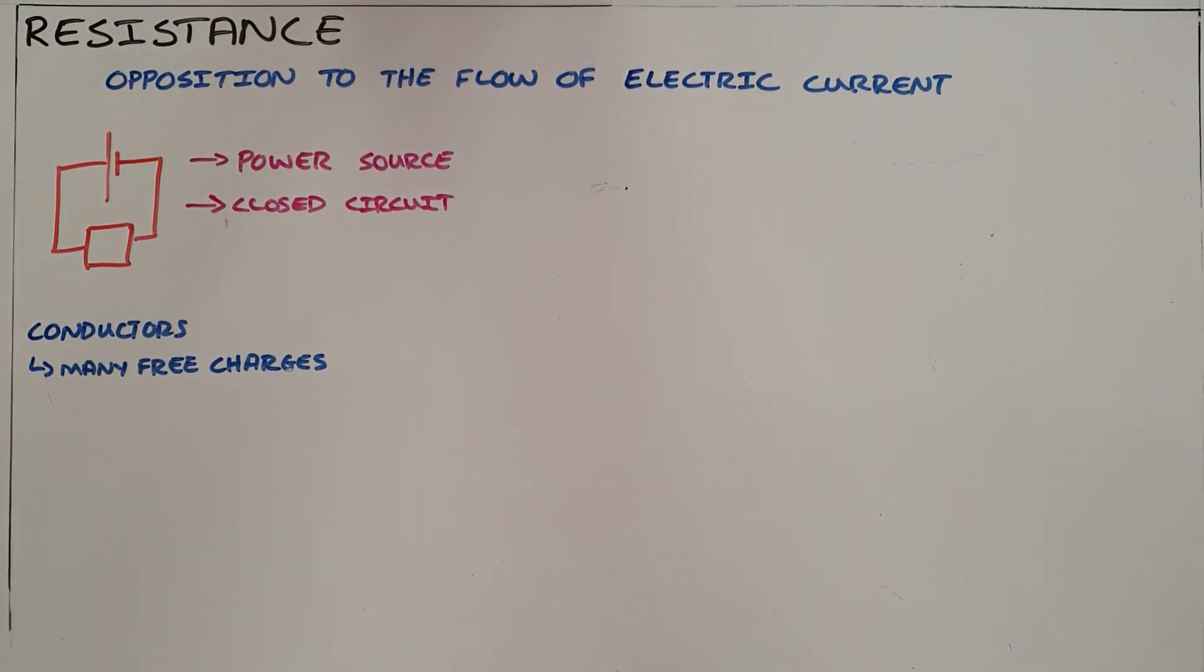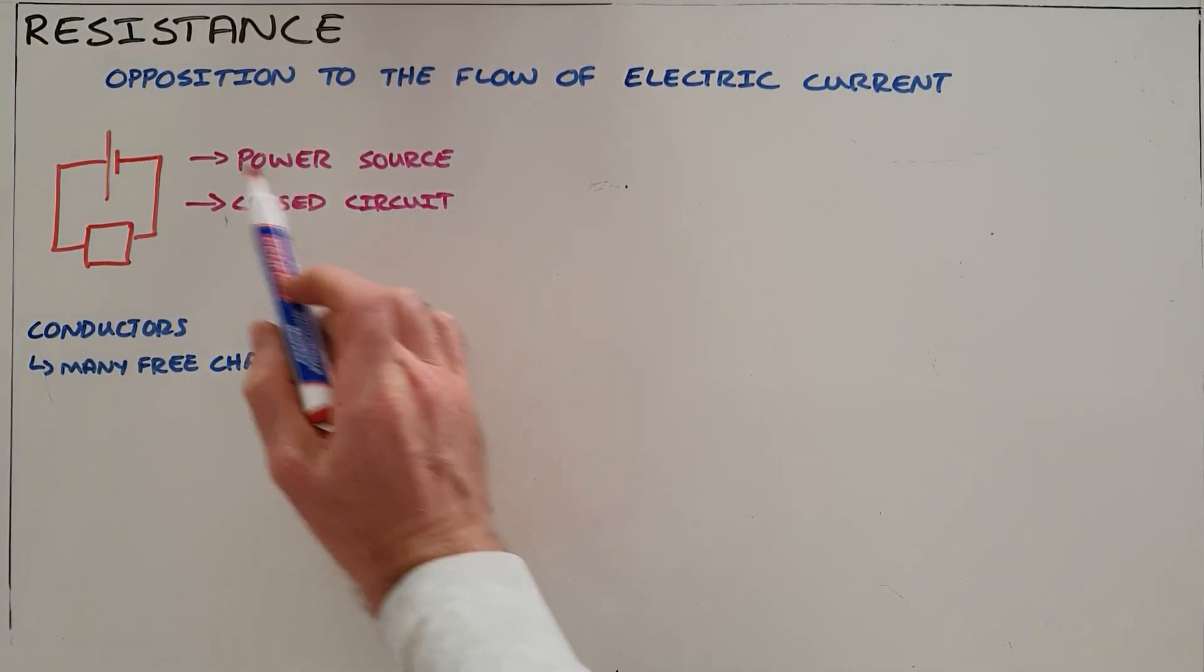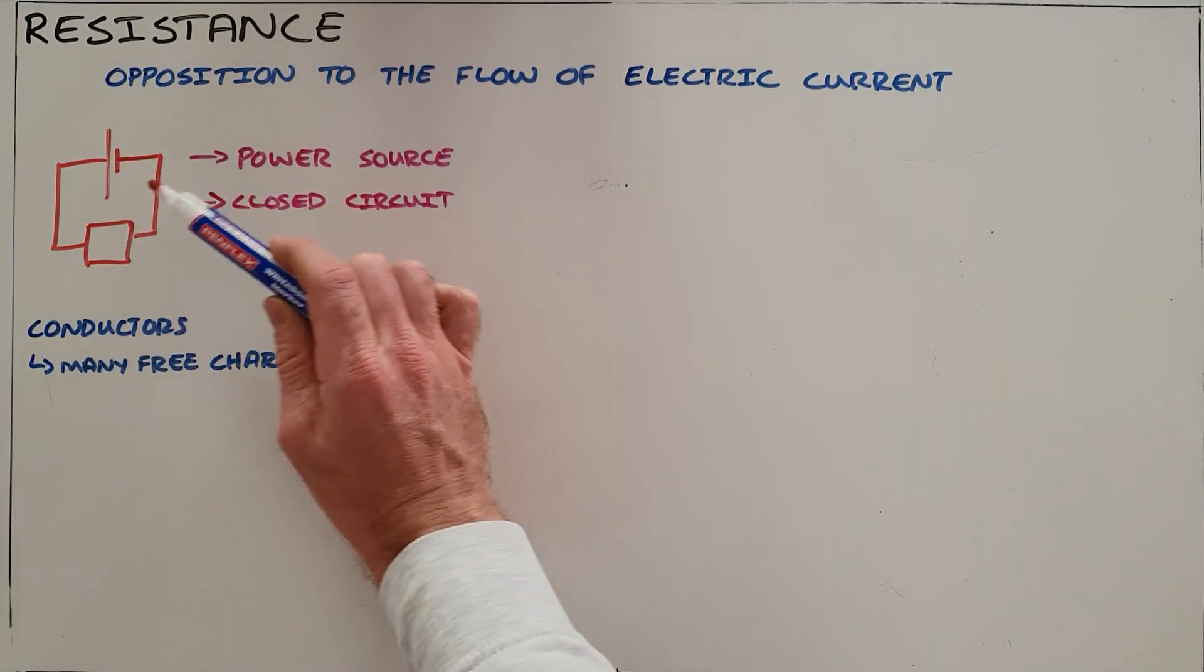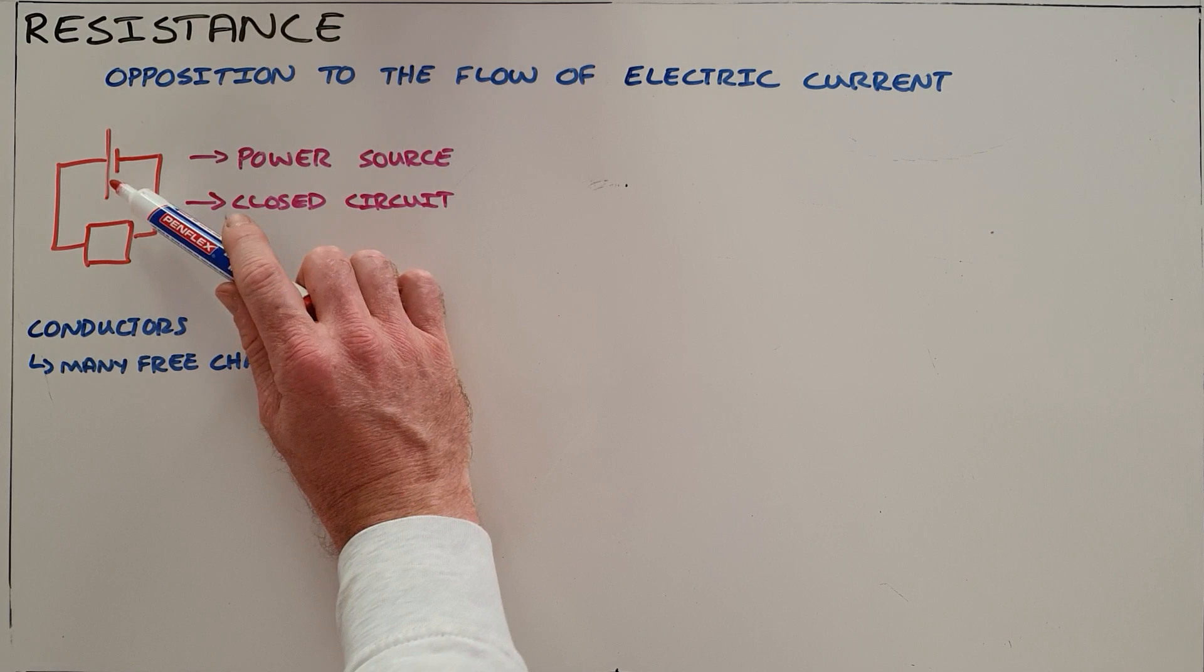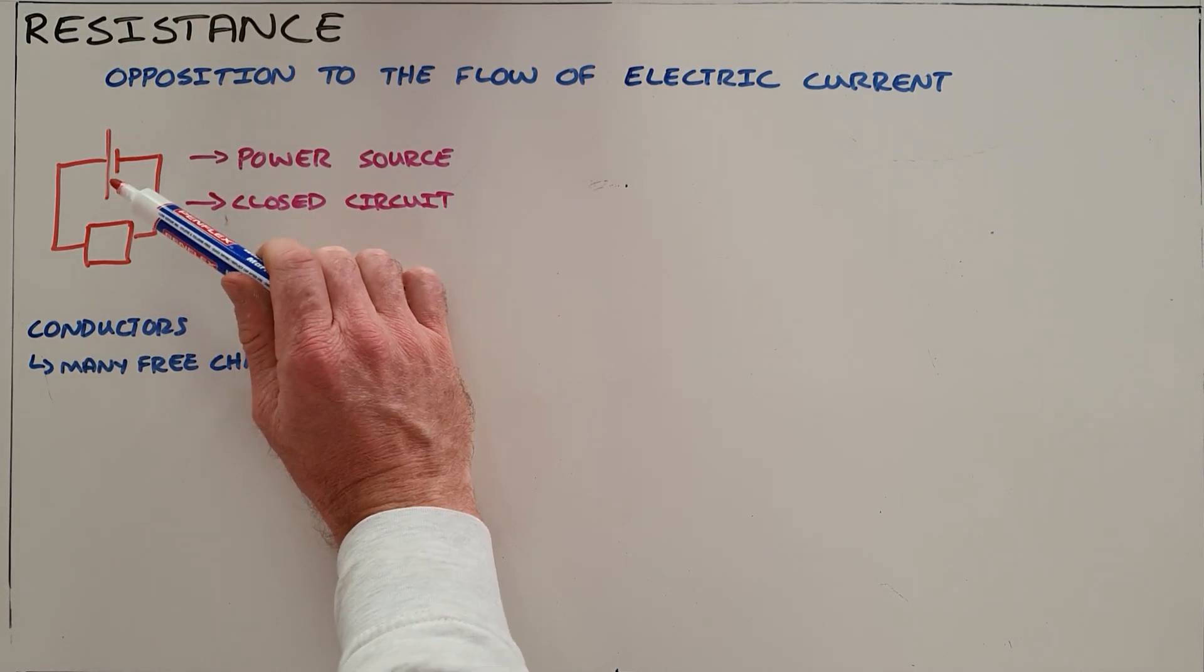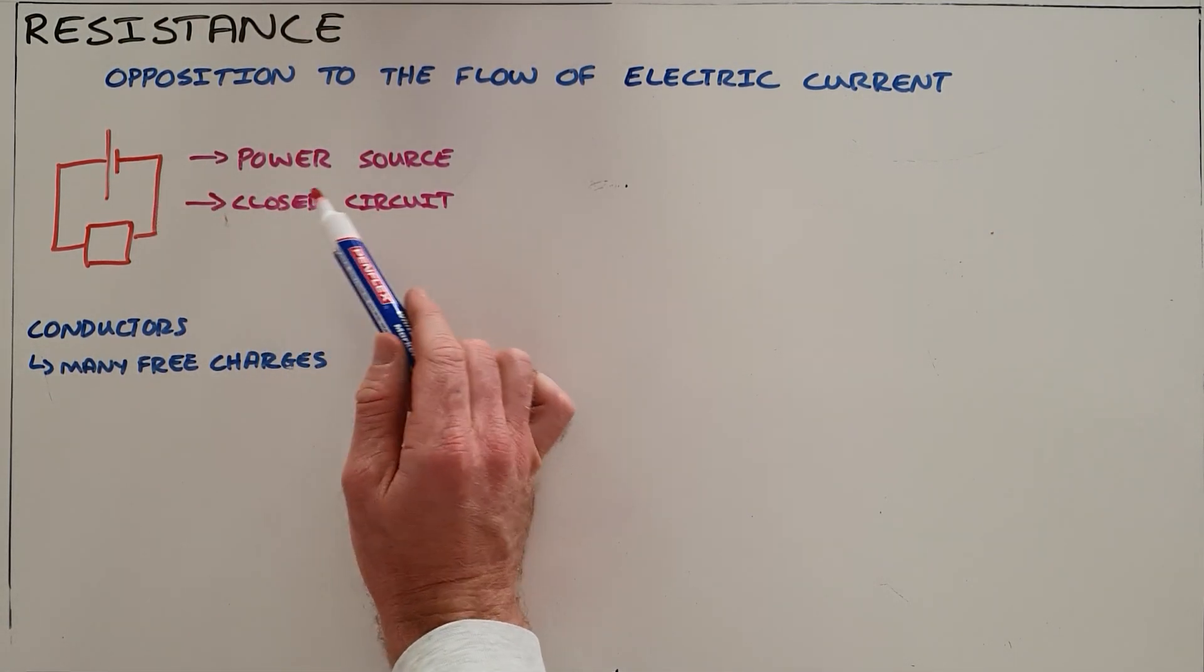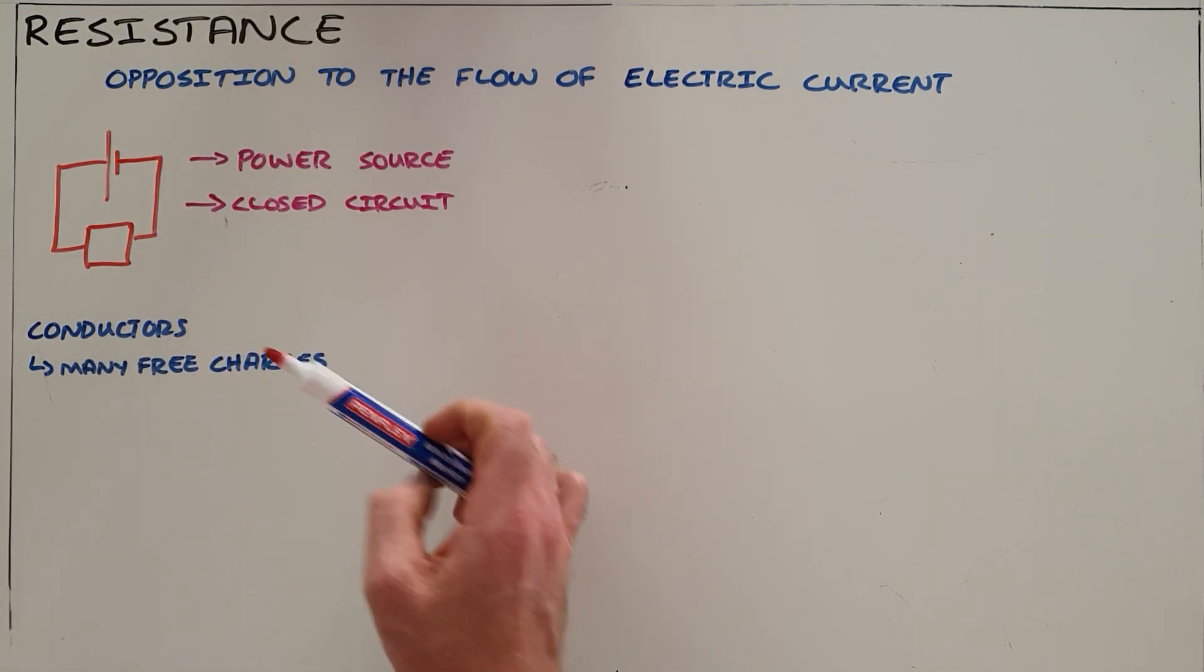Resistance is opposition to the flow of electric current. In order to create a flow of electric current we need a power source, which in most circuits will be a battery as a source of direct current, and we also need a closed circuit to allow charge to flow all the way around.